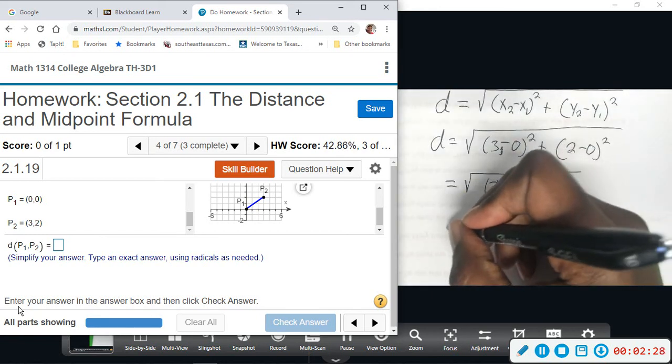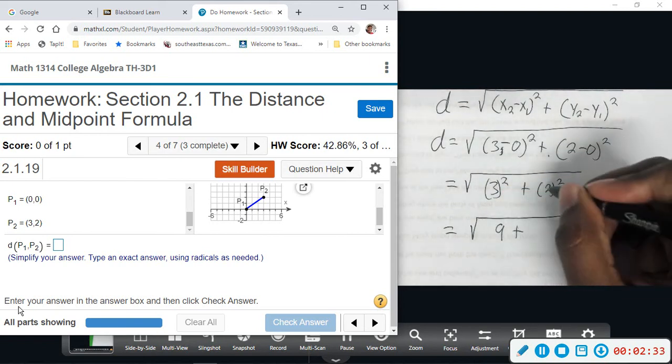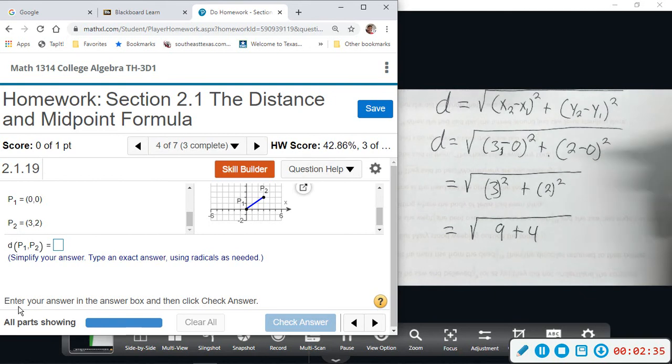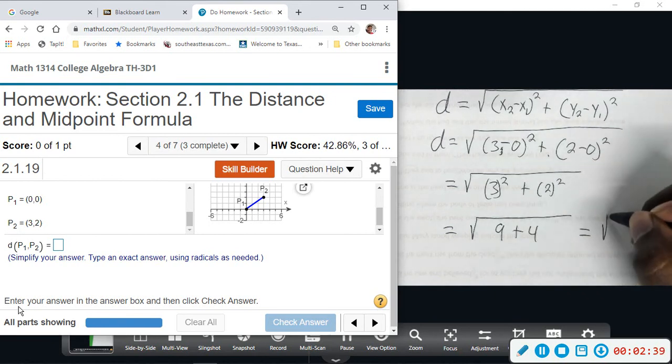Now we're looking at the square root of 3 squared, which is 9, plus 2 squared, which is 4. And then that will give us 9 plus 4, square root of 13. We can leave it in this form. This will be the exact distance from those two points.